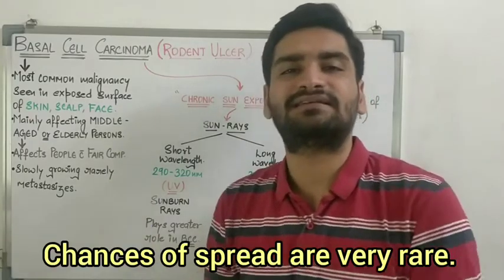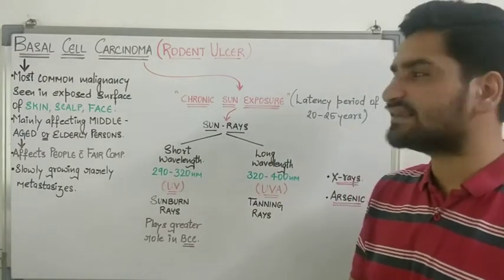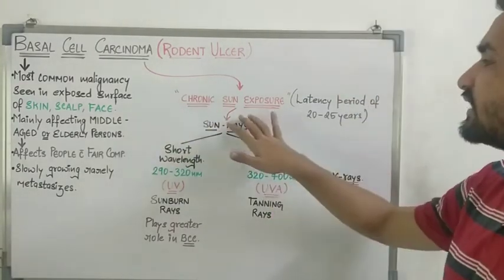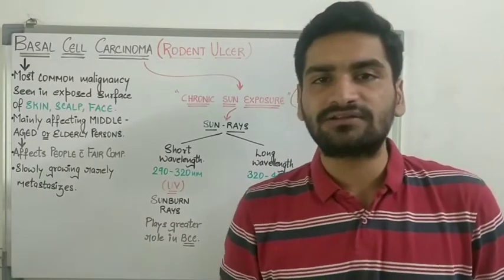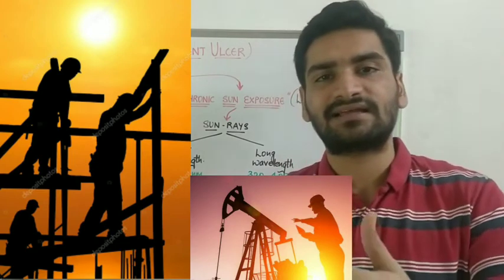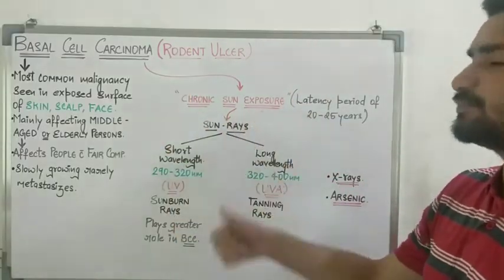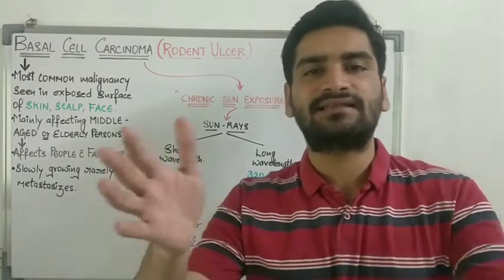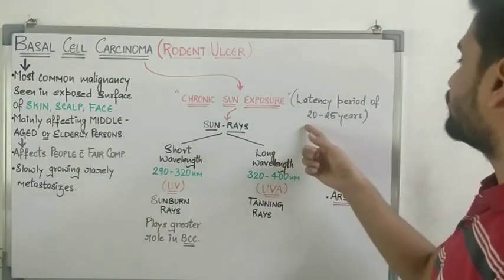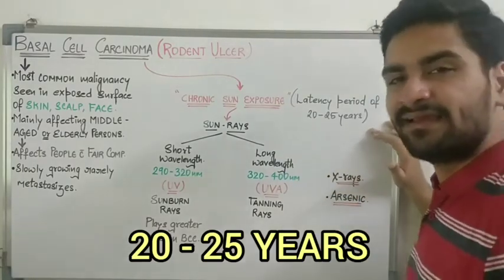The most common etiology for the occurrence of basal cell carcinoma is chronic sun exposure. Industrial workers and construction site workers are chronically exposed to the sun as their work is mostly outdoors. The latency period — the time of continuous exposure before the tumor develops — is 20 to 25 years.